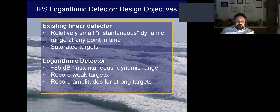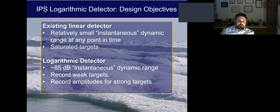The existing linear detector in the IPS5 detects relatively small instantaneous dynamic ranges at any point in time and usually results in saturated targets. Whereas the logarithmic detector we are testing on our new sonar has an 85 decibel instantaneous dynamic range, which allows for recording both weak and strong targets. Our goal is to record weak and strong targets out of saturation, so weak targets don't fall below the noise floor and strong targets don't get clipped.